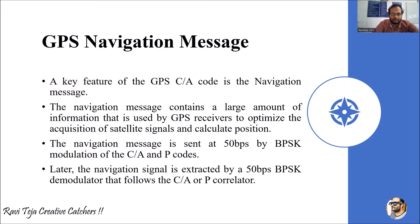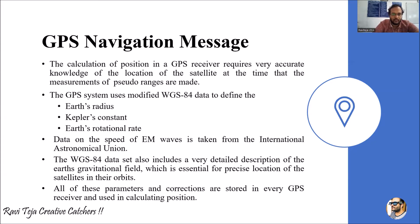The calculation of position in a GPS receiver requires very accurate knowledge of the location of the satellite. At the same time, measurements of pseudo-ranges or pseudo-random numbers are made. The GPS system uses modified WGS 84 data to define key parameters.